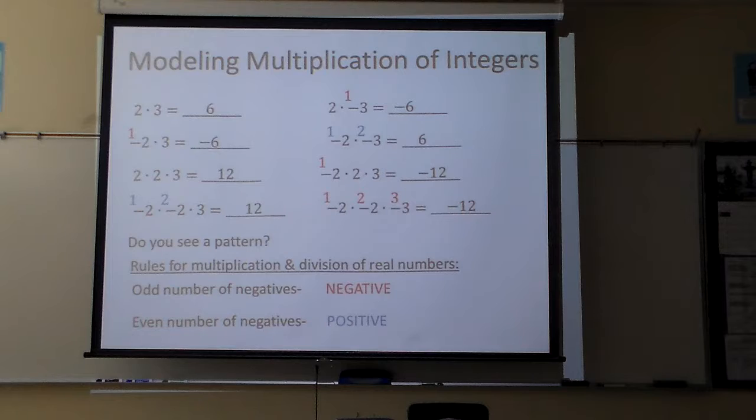So the simple rule would be this. If there are an odd number of negatives, it's negative. An even number of negatives, it is positive.